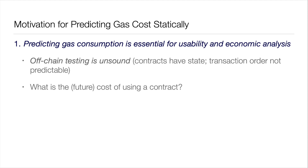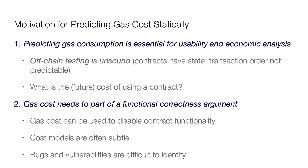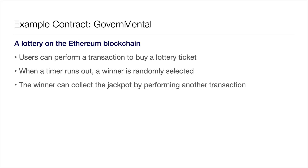Also, the gas cost really needs to be part of a functional correctness argument, because you can use the gas cost — either intentionally or unintentionally through a bug — to disable functionalities of contracts de facto. Even if you proved something, like that you can at any time extract your money from the contract, this might not be true if you take into account the gas cost. And that does happen in practice.